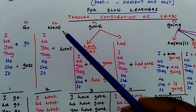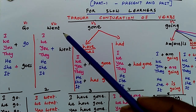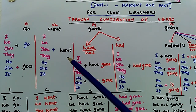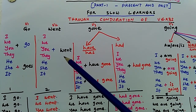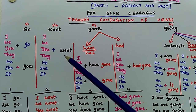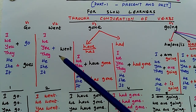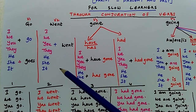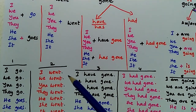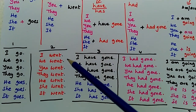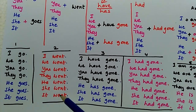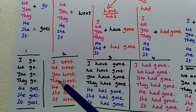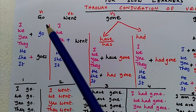For verb two, it is quite easy for the children to write this table. Just adding I, we, you, they, he, she, it without doing anything else, we get the next table: I went, we went, you went, they went, he went, she went, it went. This is called the simple past table.